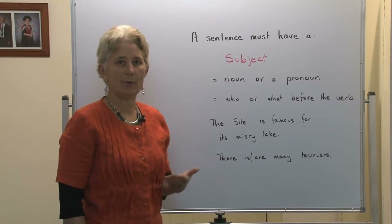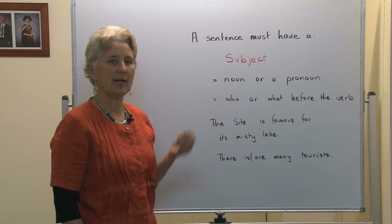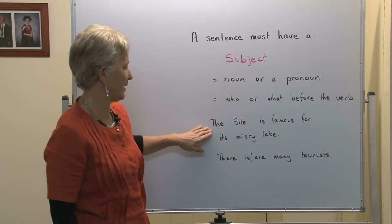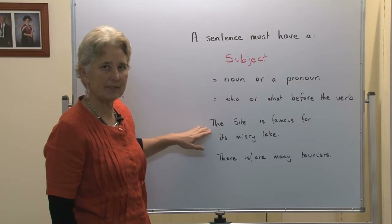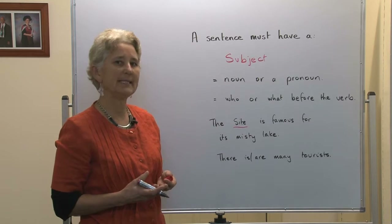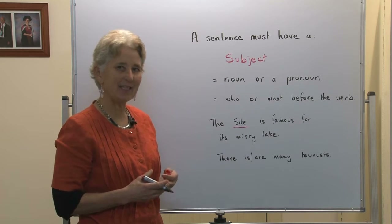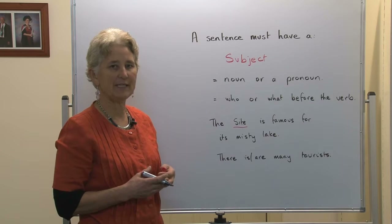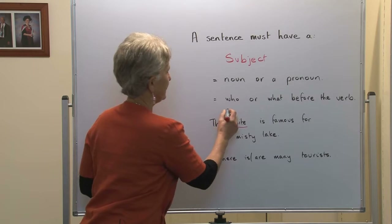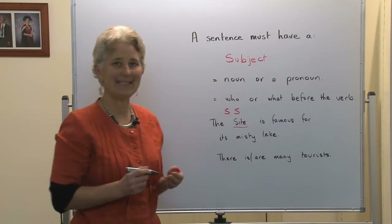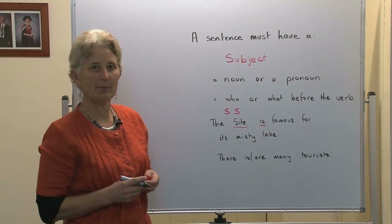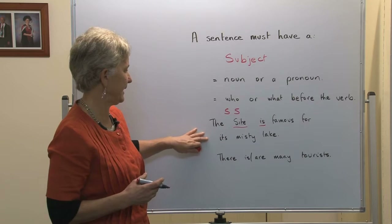We can generally work out the subject of the sentence by asking who or what before the verb. For example: the site is famous for its misty lake. What is famous for the misty lake? The site. So the site is the grammatical subject of the sentence. There is only one site, so it is singular and takes the singular verb: the site is famous for its misty lake.